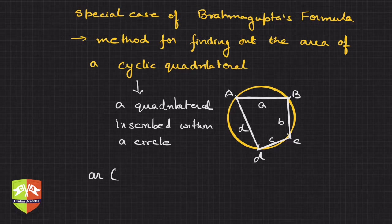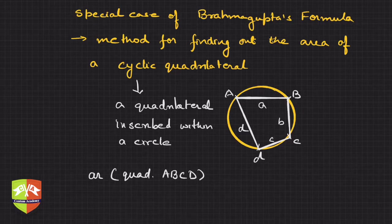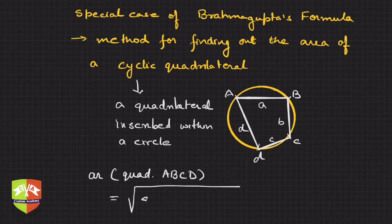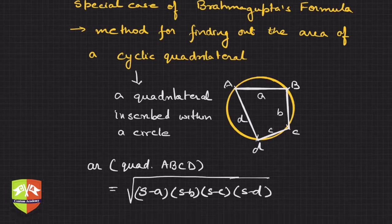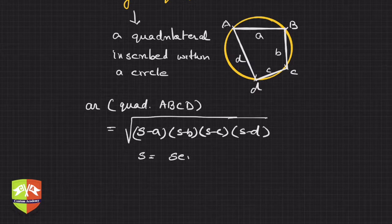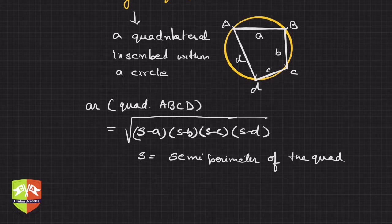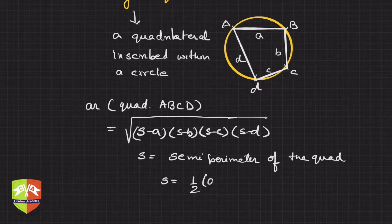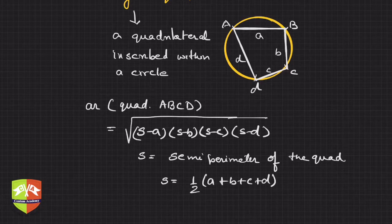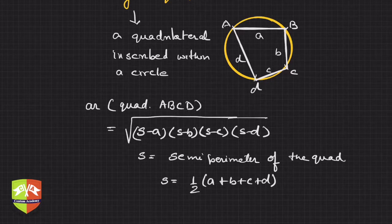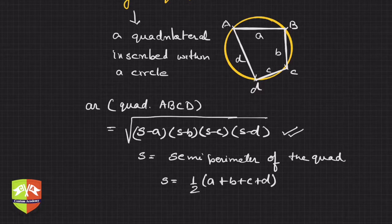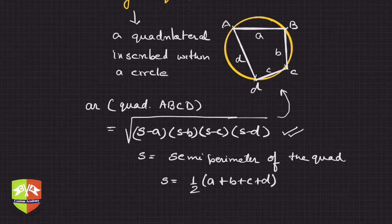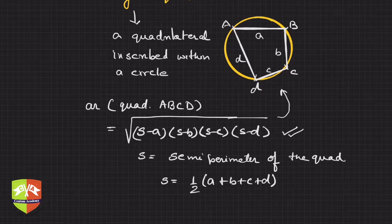If ABCD is the cyclic quadrilateral and the side lengths are a, b, c, and d, then he found out area of quadrilateral ABCD is equal to square root of (s-a)(s-b)(s-c)(s-d), where s is called semi-perimeter of the quadrilateral. Semi means half, so half of perimeter, that means s = (a+b+c+d)/2. So if s is this, then area of quadrilateral is given by this formula.